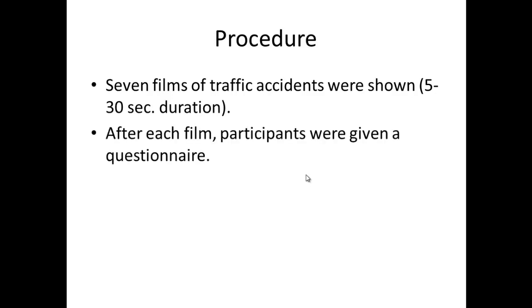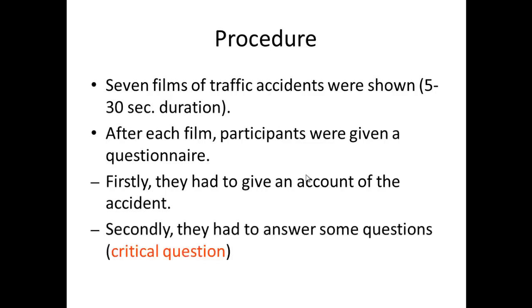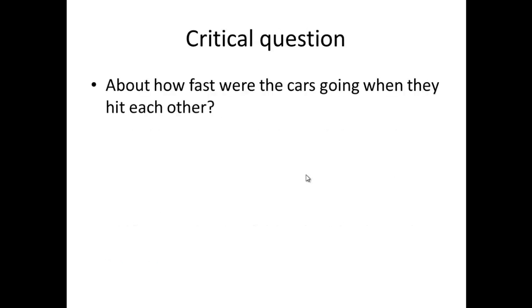At the end of each film, participants were given a questionnaire. Within that questionnaire, they had to do two things. The first thing they had to do after each film was give an account, just generally describe what they had just witnessed. The second thing they had to do was answer a series of questions. Loftus and Palmer weren't really interested in the description they gave of the accident or their answer to the majority of the questions. But there was one critical question that was hidden or embedded within the other questions, and that was the dependent variable. That critical question was: About how fast were the cars going when they hit each other?